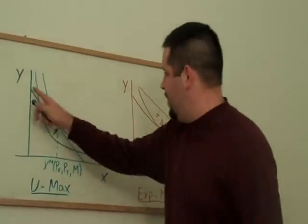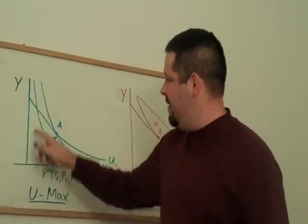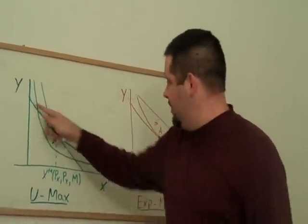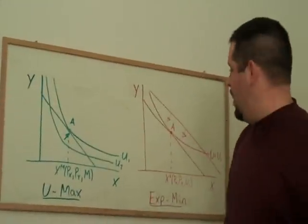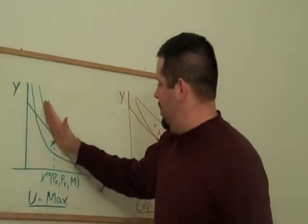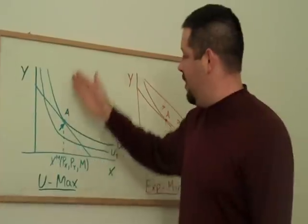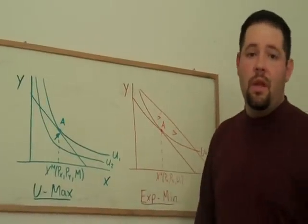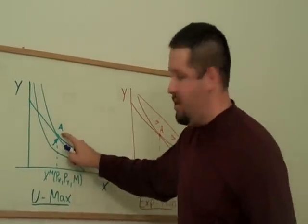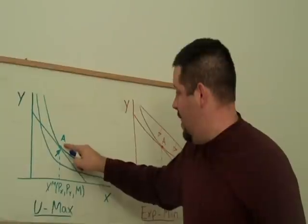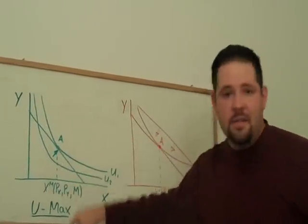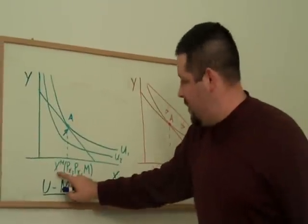We have a budget set, and given those affordable bundles in this triangle here, we seek to pick the best one. We basically push our indifference curves out until there are no preferred bundles that we can afford, and so we get to a bundle like bundle A. And the quantity of X that corresponds to that is going to be our demand curve.